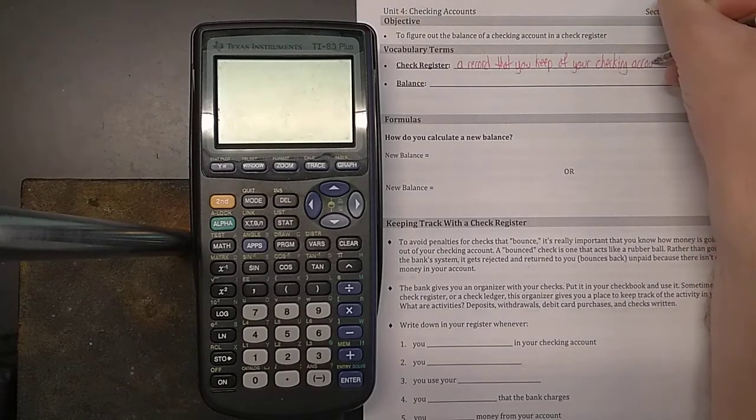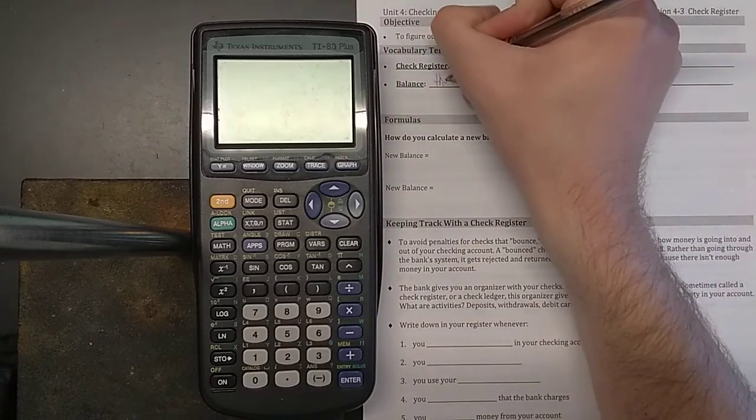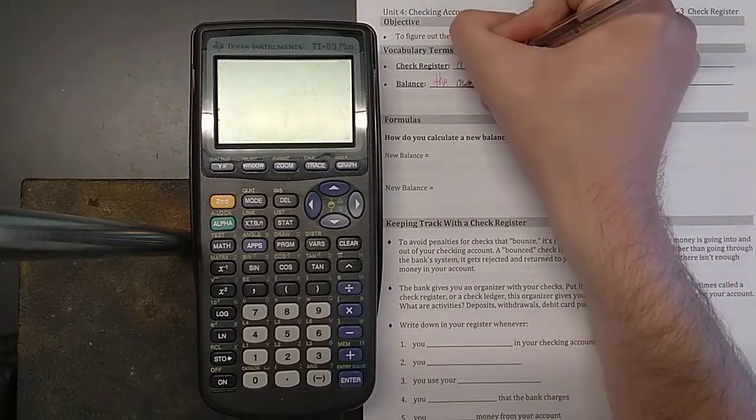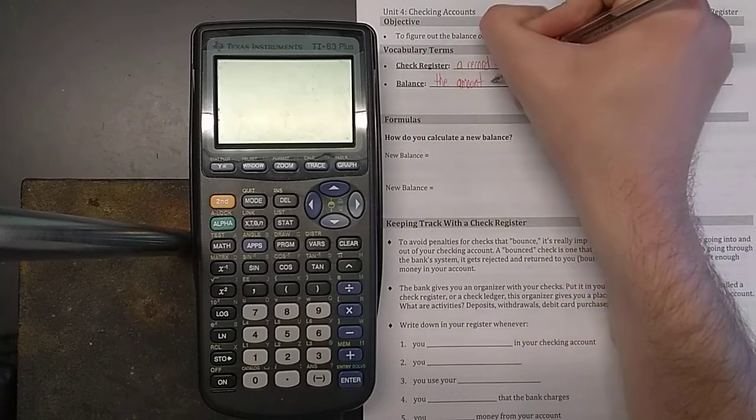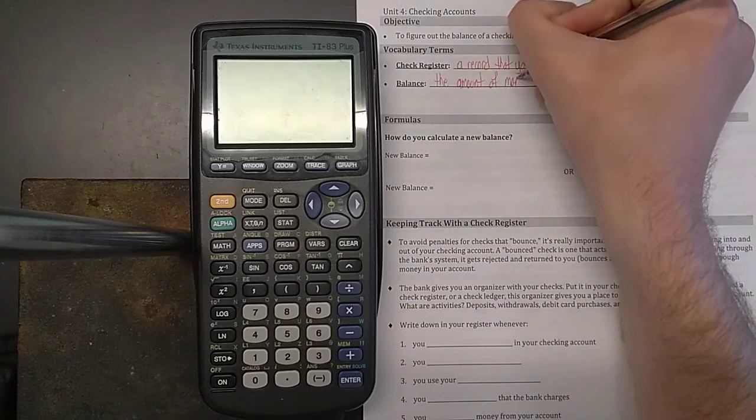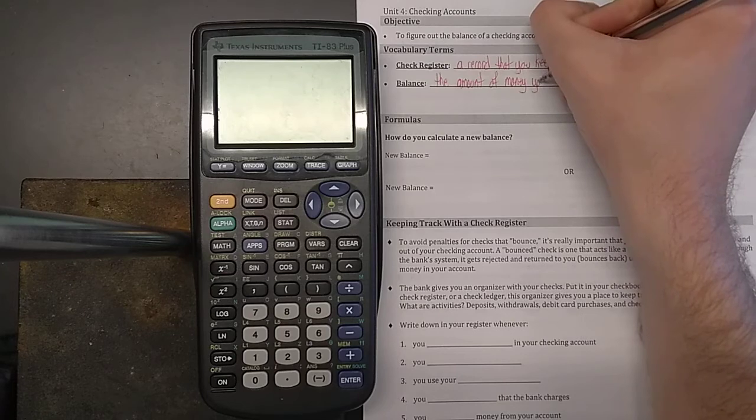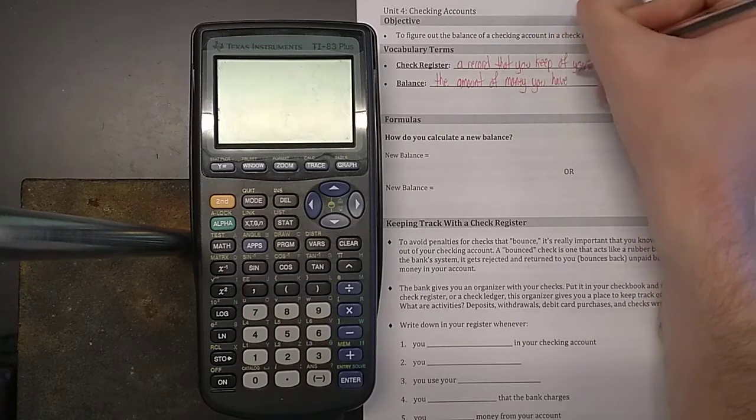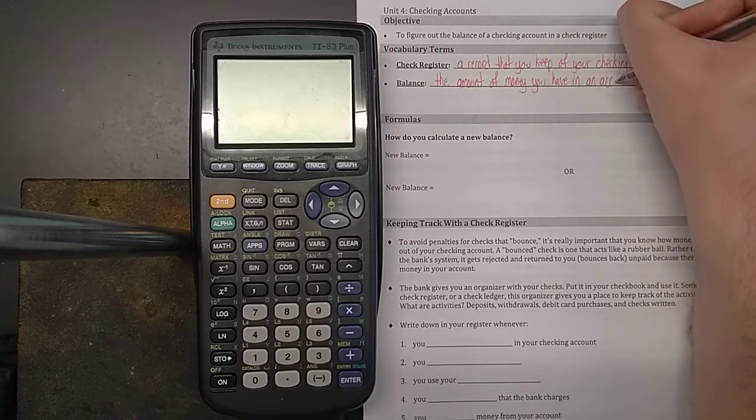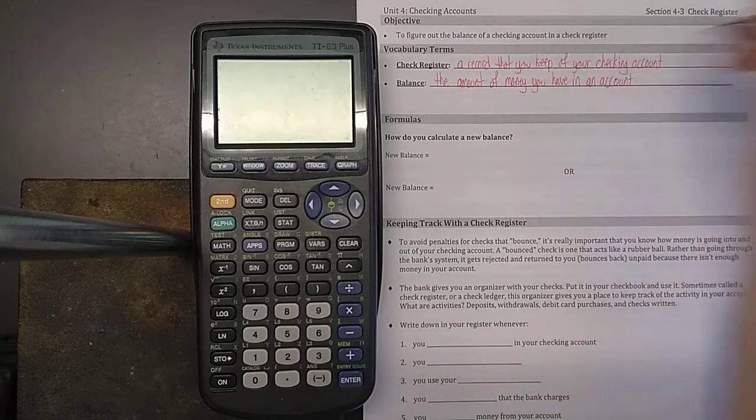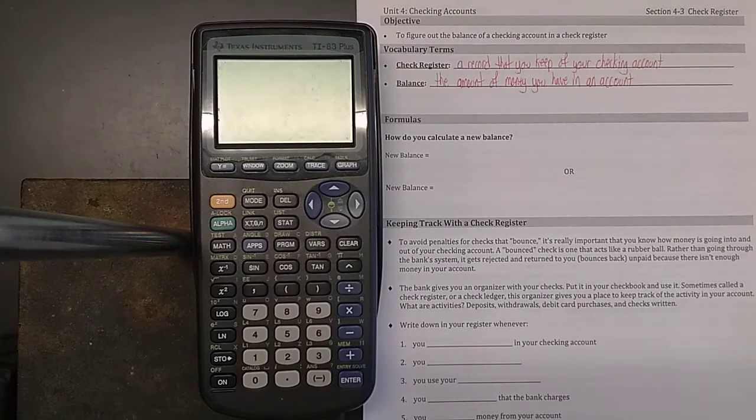Really, what you're keeping track of is something called the balance. A balance in any sort of account is the amount of money you have in an account. So if we're talking about a checking account or a savings account, a bank account that you own, it's how much money you have in there.